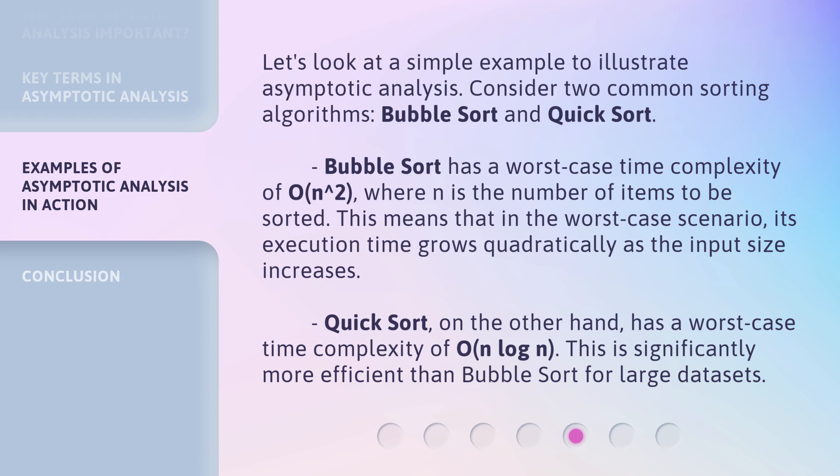Quick Sort, on the other hand, has a worst-case time complexity of O(n log n). This is significantly more efficient than Bubble Sort for large datasets.